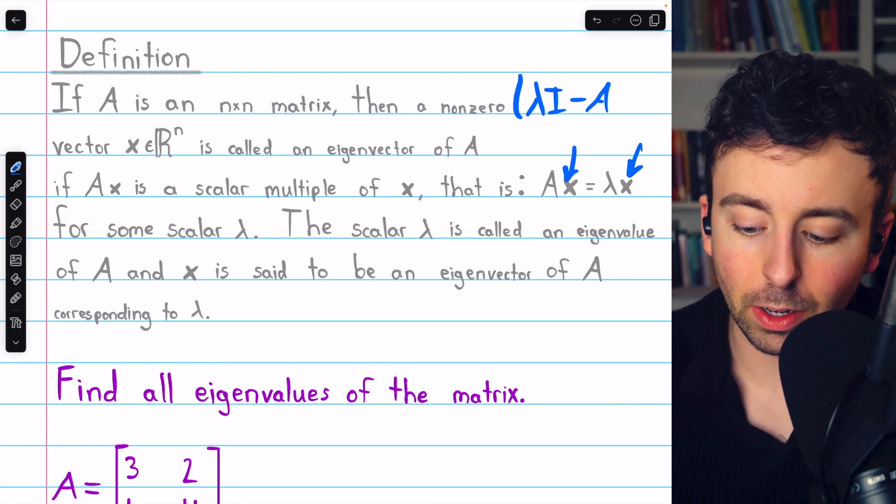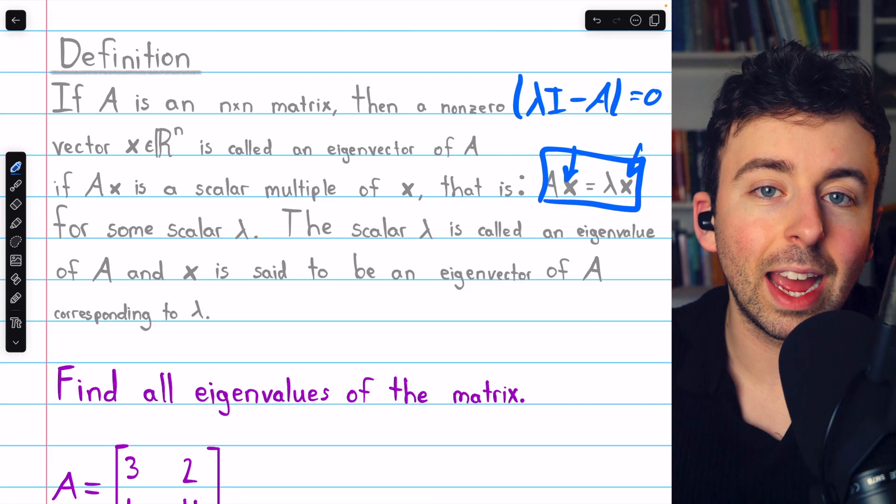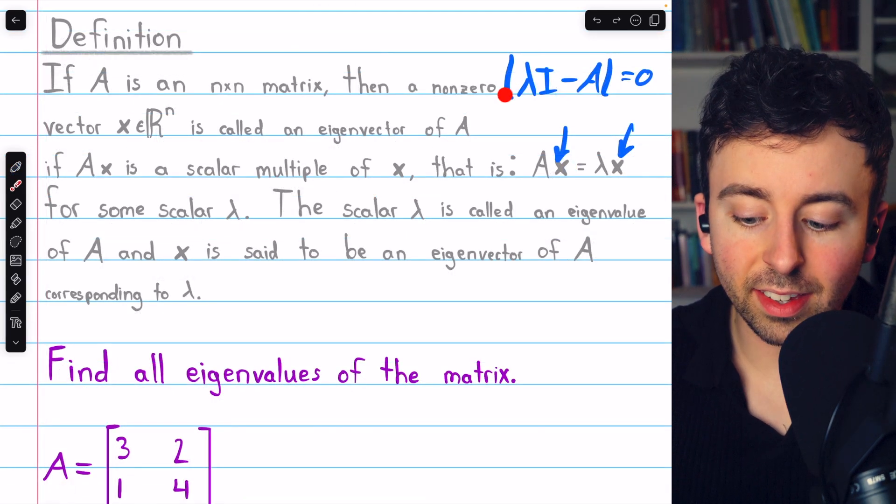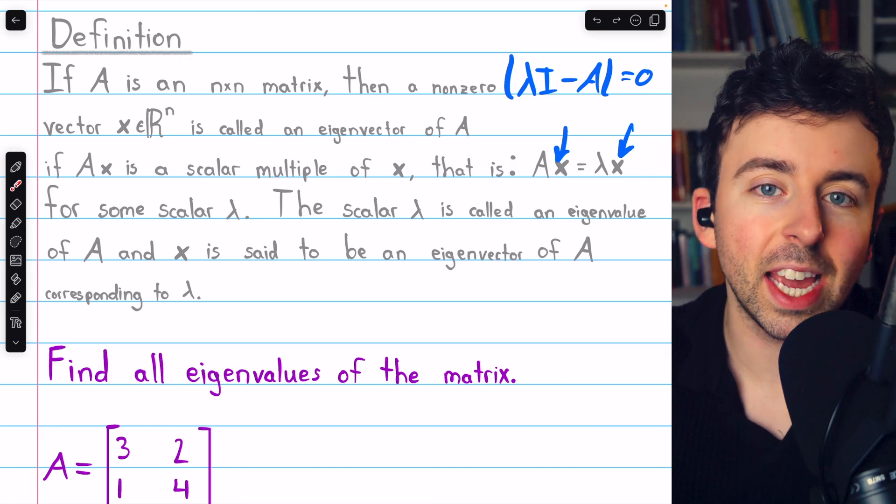If the determinant of this matrix is equal to 0, then this system is going to have non-trivial solutions. So we'll set this determinant equal to 0, then we'll solve for lambda. Those are the eigenvalues.